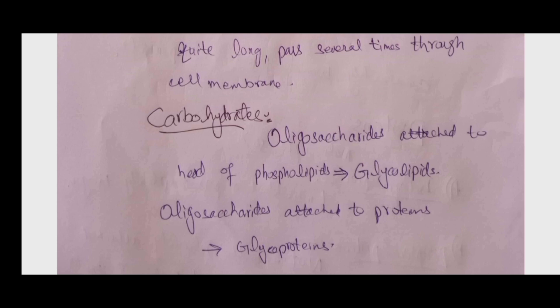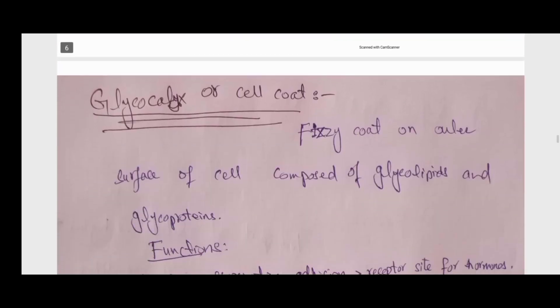What is the carbohydrate component of the cell membrane? These are oligosaccharides in nature, basically attached to the phospholipid head. They are known as glycolipids when attached to phospholipids, and glycoproteins when attached to proteins. What is the glycocalyx, or cell coat? This is a fuzzy-shaped coat present on the outer surface of the cell membrane, composed of glycolipids and glycoproteins.